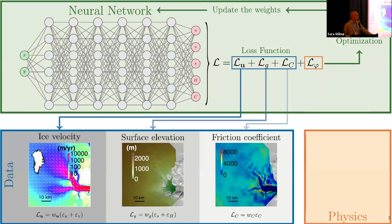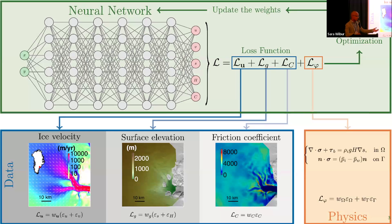The inputs are x, y coordinates and the outputs are velocity, surface geometry, and the basal friction coefficient. We use these to construct the loss function, which has two parts: a data misfit term from observations — velocity and surface elevation — and a physics term using the PDE residual. We train the neural network by optimizing this loss so the outputs both satisfy the PDE and minimize the misfit from observations.